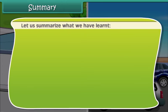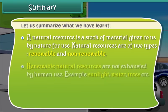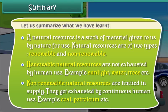Let us summarize what we have learned. A natural resource is a stock of material given to us by nature for use. Natural resources are of two types: renewable and non-renewable. Renewable natural resources are not exhausted by human use — examples include sunlight, water and trees. Non-renewable natural resources are limited in supply and get exhausted by continuous human use — examples include coal and petroleum.